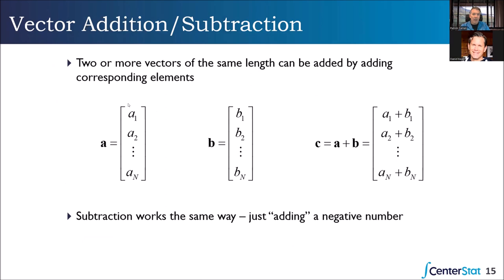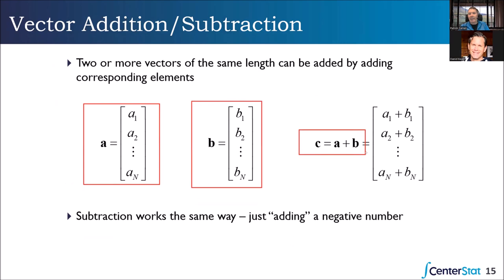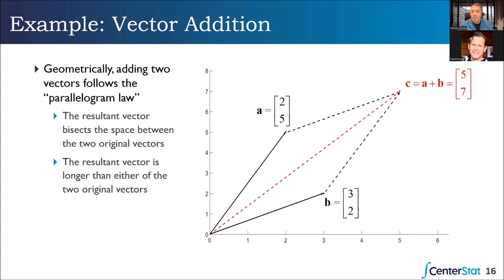We have a vector of length n called a holding one set of values, and vector b. We can add a plus b: a_1 plus b_1 gives the new element of c, and so on. The big requirement: the vectors must be the same length — the same number of rows — or else we can't add them. Vector a is two and five; we go out two units and up five units. Vector b is three and two. Two plus three is five, and five plus two is seven. Following the parallelogram law, the new vector C bisects the two original vectors and combines their lengths.